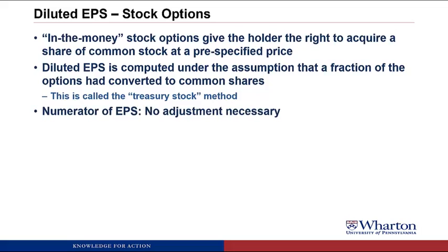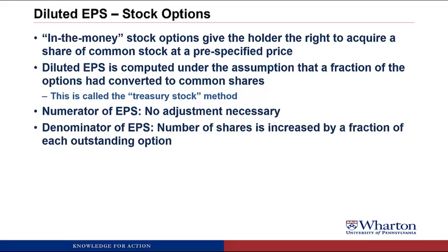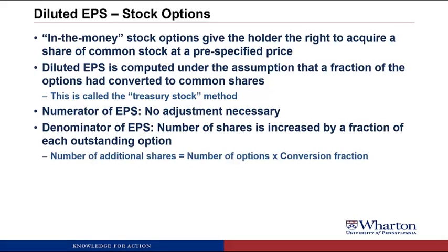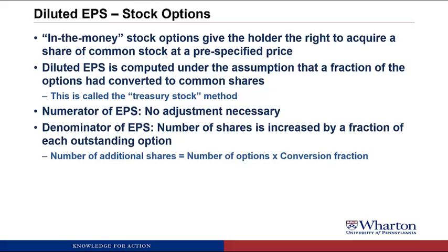In the numerator of EPS we don't need to make any adjustment, because stock options have no effect on the income statement after they've been granted. The options were probably granted long ago; now they're past the vesting period and in the money — whether they're exercised or not has no impact on net income. In the denominator we add a number of shares based on a fraction of each outstanding option: the number of additional shares equals the number of options times a conversion fraction, which is (average stock price minus exercise price) divided by average stock price.